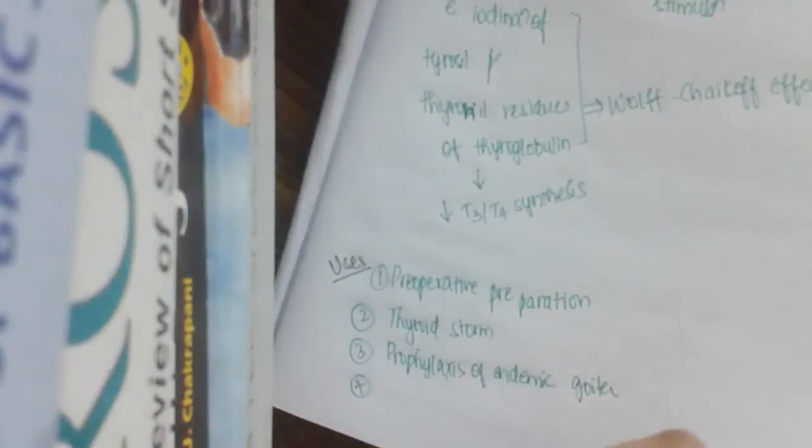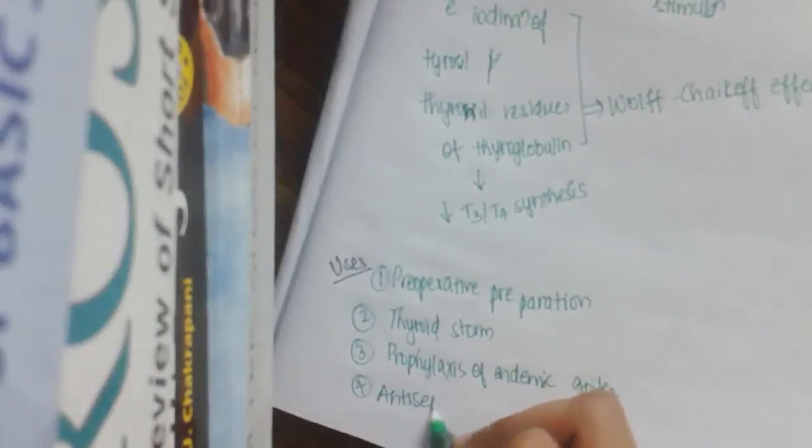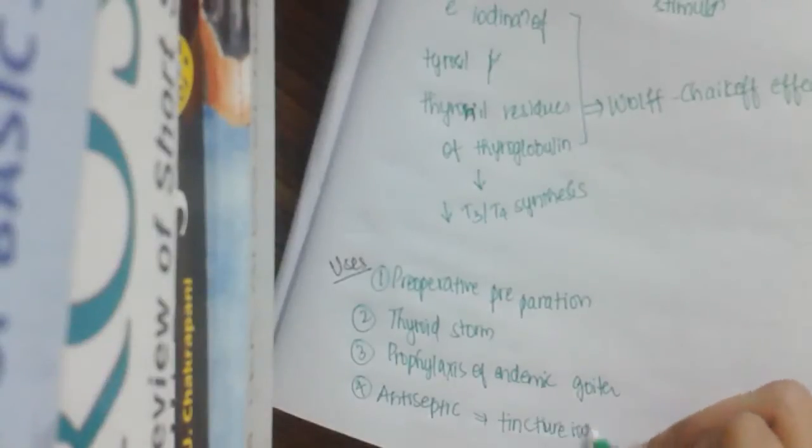The fourth use is as an antiseptic. It is used as tincture iodine or betadine, which is used for surgeries. We use iodine or povidone iodine as an antiseptic for disinfection.